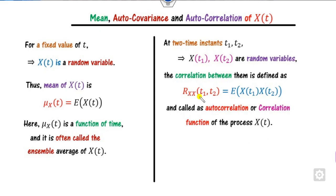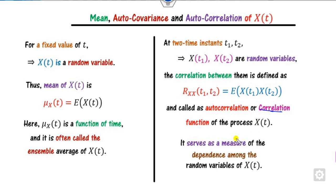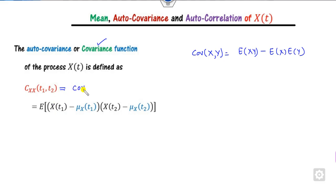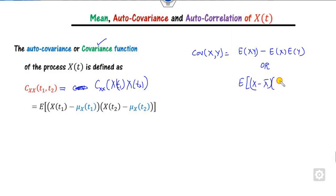R_x is called the autocorrelation, or simply the correlation function, of the random process x(t). As the name suggests, it measures the degree of dependence among the random variables. Based on this correlation, we can define the covariance. As we know, the covariance between random variables is the expected value of the product minus their means.